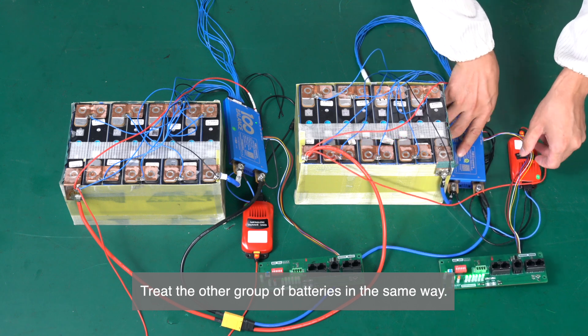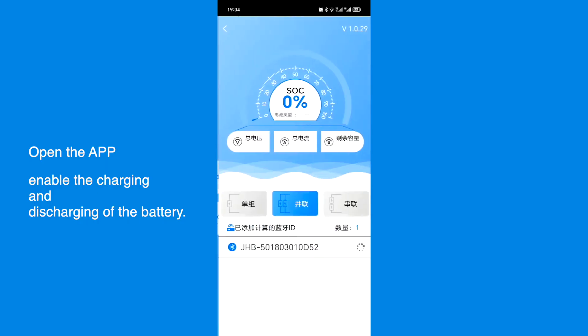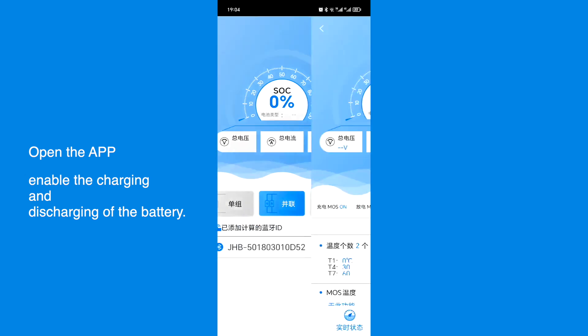Treat the other group of batteries in the same way. Open the APP. Enable the charging and discharging of the battery.